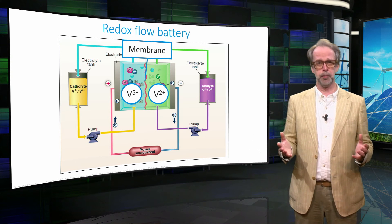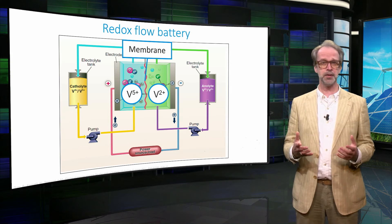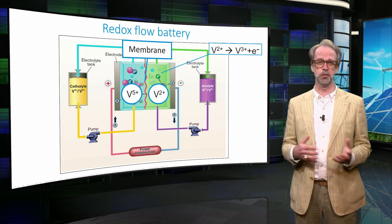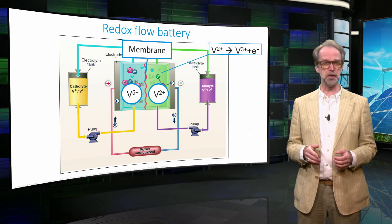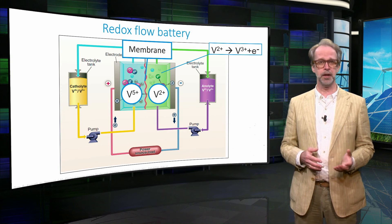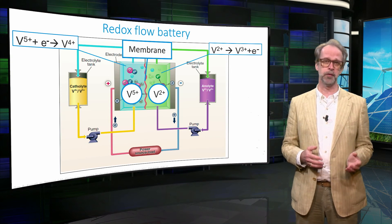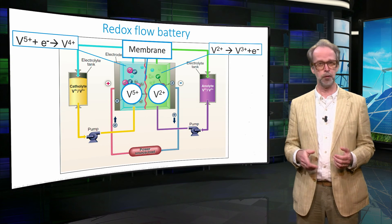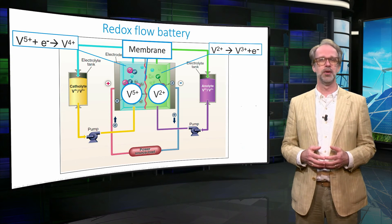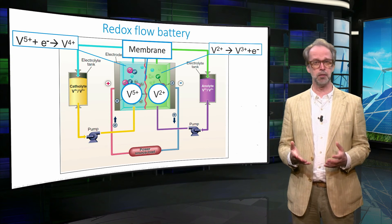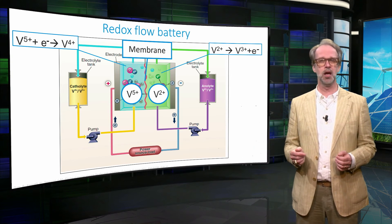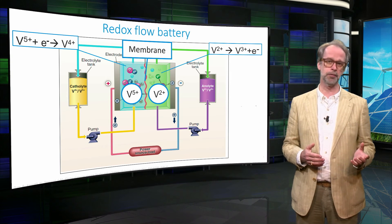This is an out-of-equilibrium situation. Hence, at the right electrode, vanadium 2+ reacts to form vanadium 3+, donating an electron to the electrode. At the left electrode, vanadium 5+ forms vanadium 4+ by accepting an electron from the electrode, and thus from the external circuit. To prevent the electrolyte from becoming charged, protons — in this case hydrogen ions — move through the membrane from the right to the left compartment.